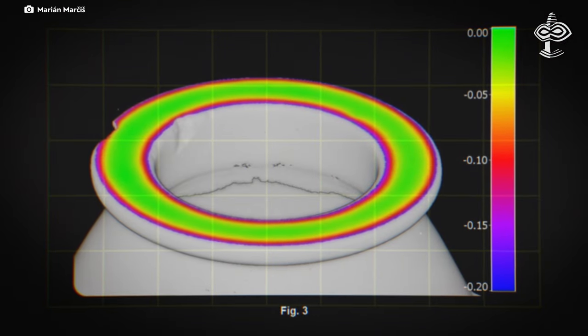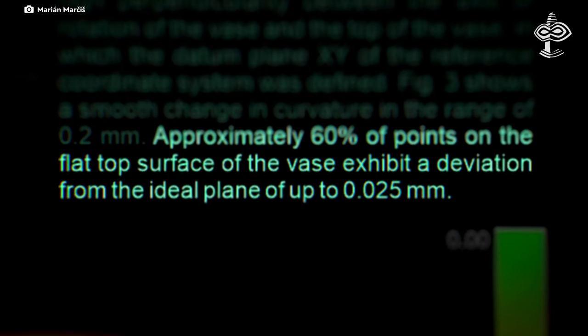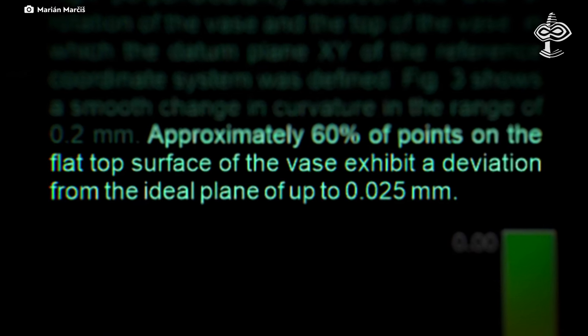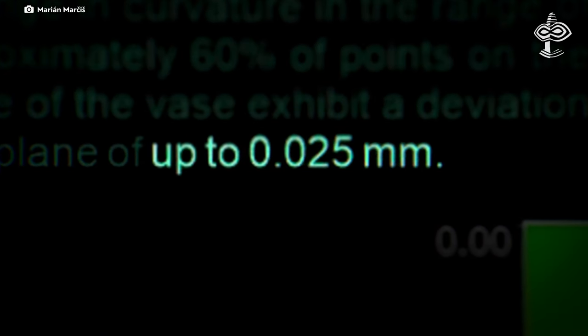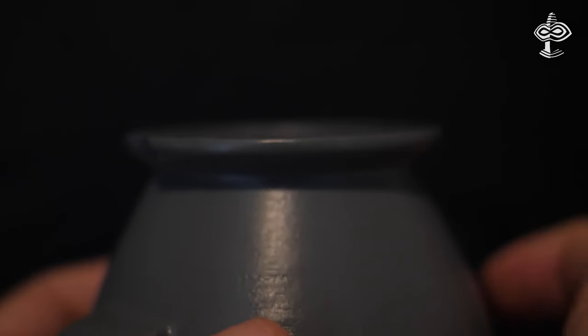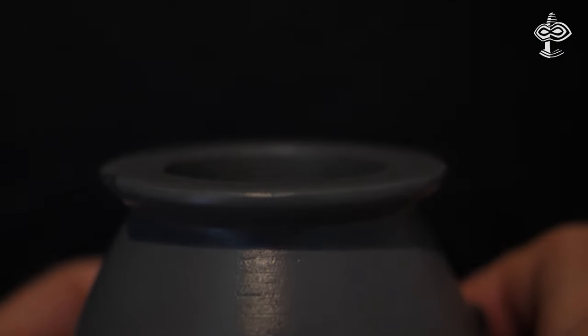For example, when examining the flat-top part of the vase, about 60% of the points show that it is almost perfectly flat. The variations are only a quarter of a human hair's thickness, and controlling such minute differences is extremely challenging without precise tools.